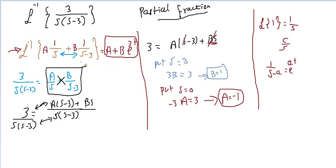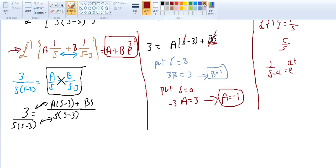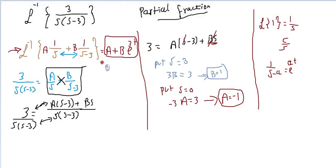So this is A multiplied by 1 is A plus 1 over s minus 3. So it's like the formula of 1 over s minus a. So this is exponential e to the at and the shift. So we get the equation A plus B e to the power of 3t.